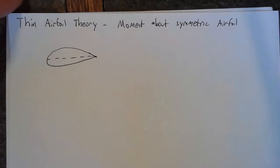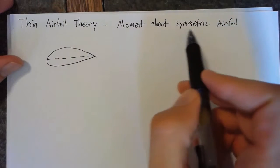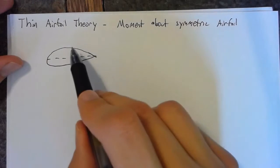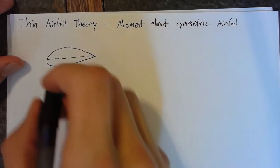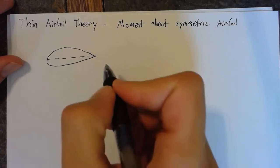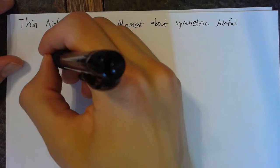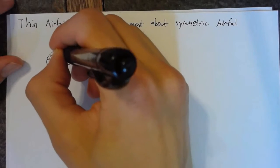Howdy. In this lesson, we're going to be deriving the moment about a symmetric airfoil using thin airfoil theory. We have a symmetric airfoil, which means that our chord line is equal to our camber line. And we're representing this as a vortex sheet,